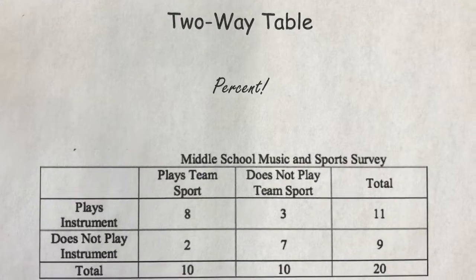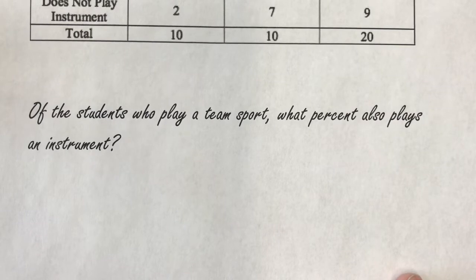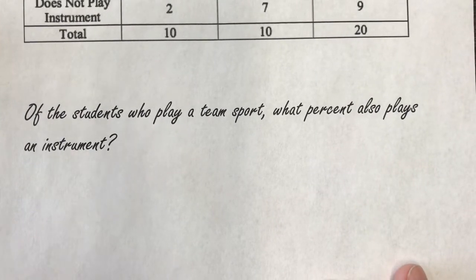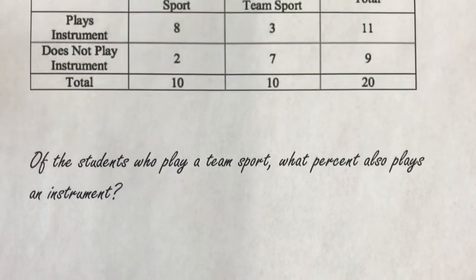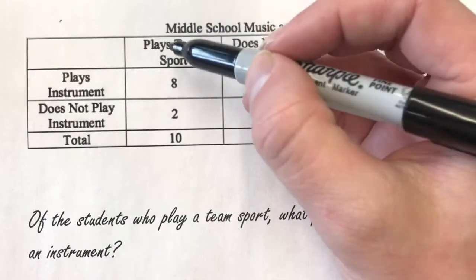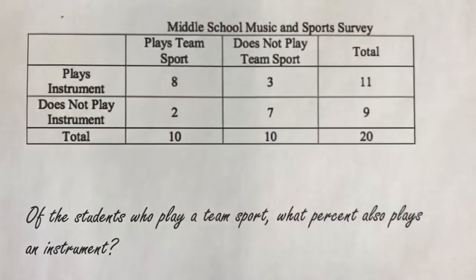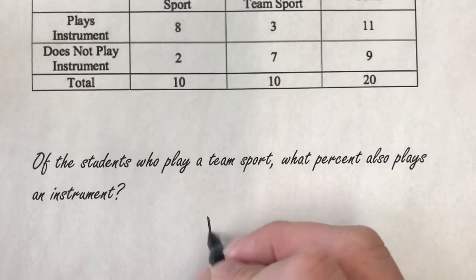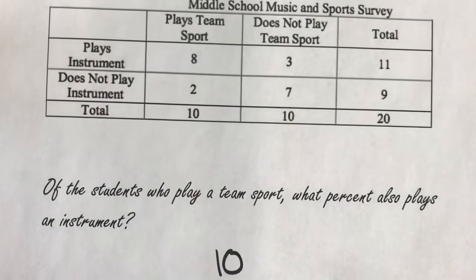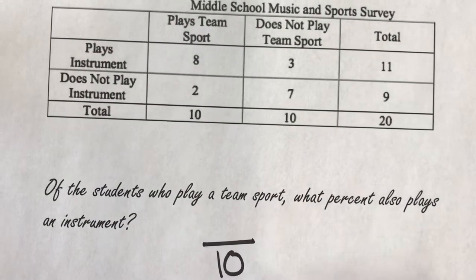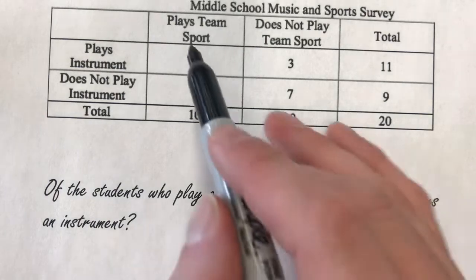Two-way tables. What percent of the students who play a team sport also play an instrument? So, the people who play a team sport is 10 people. I have 10 people who play a team sport out of the people who play a team sport. Out of that, how many play an instrument?